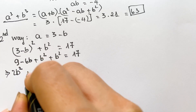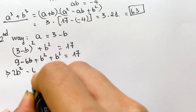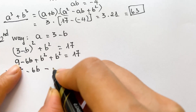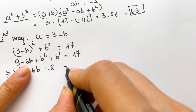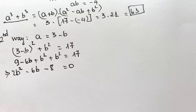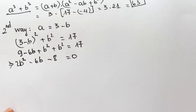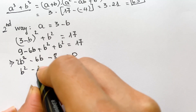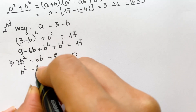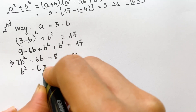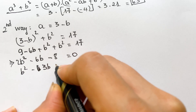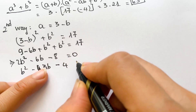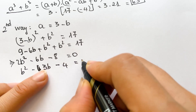Then we have the equation: 2b squared minus 6b minus 8 is equal to 0. And so, dividing by 2: b squared minus 3b minus 4 is equal to 0.